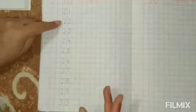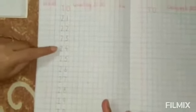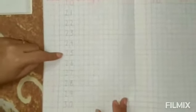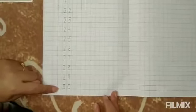Aur beto jo aap revision work kar rahe hai. You have to make the all numbers beautifully. And second thing, aap ko drill karke karna hai. 21, 22, 23, 24, 25, 26, 27, 28, 29 and 30.